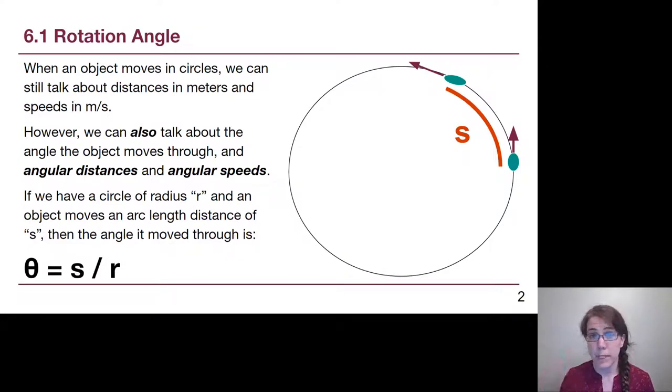The first idea is that we need to make sure we know how to describe the motion of an object that is going around in a circle. The radius of that circle will be part of our discussion here in Chapter 6.